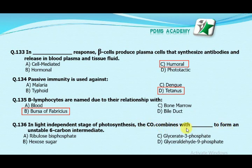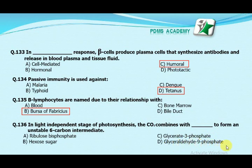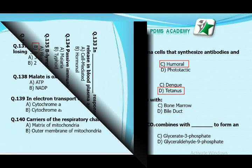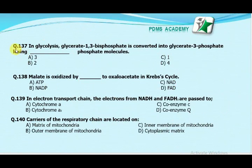Our next MCQ is: in the light-independent stage of photosynthesis, carbon dioxide combines with which molecule to form an unstable six-carbon intermediate? Option A: ribulose bisphosphate. Option B: hexose sugar. Option C: glycerate three-phosphate. Option D: glyceraldehyde three-phosphate. Our correct answer is A, ribulose bisphosphate.